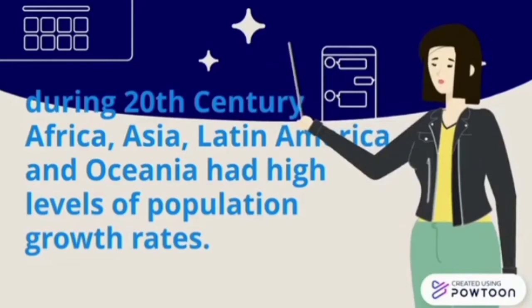Asia includes the two most populous countries: China at 1.39 billion and India at 1.35 billion. Other overpopulated countries in Asia include Indonesia at 267 million, Pakistan at 212 million, Japan at 126.5 million, Vietnam at 95.5 million, and Turkey at 82.3 million. By 2020, the total population of Latin America is projected to increase from 480 million to 612 million. The current population of Oceania is 43,415,046.